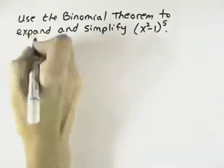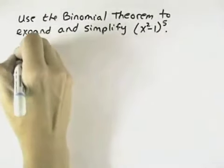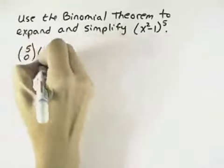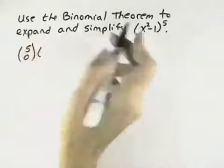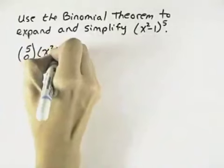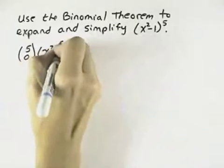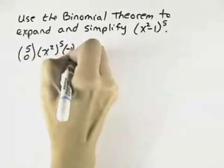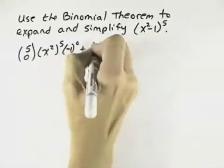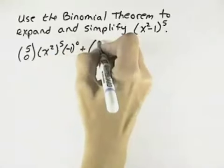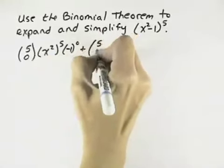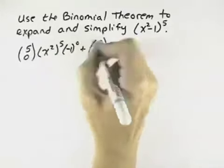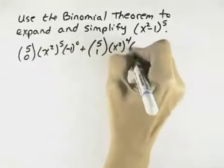So 5 is the first value, so for our first term we'll have C(5,0), and then our first term within our parentheses, x squared, will be to the fifth power, and our second term, which is negative 1, will be to the 0 power. Then we have C(5,1), moving on to the next term. Our x squared, but instead of the fifth power, that's now the fourth power.